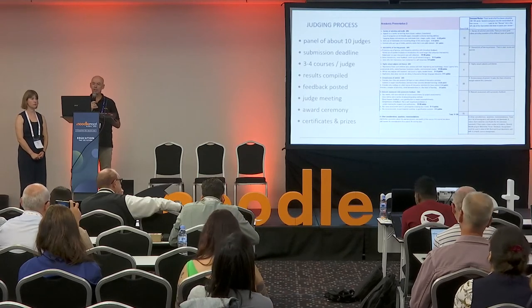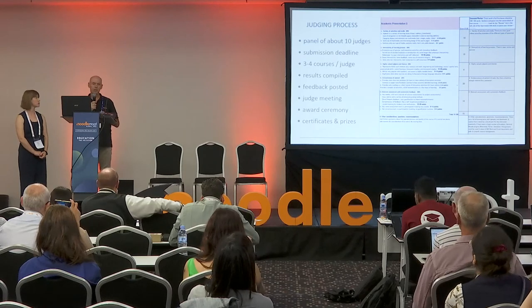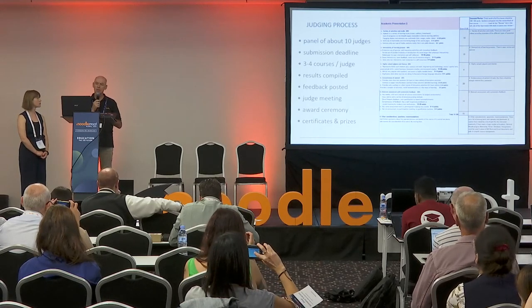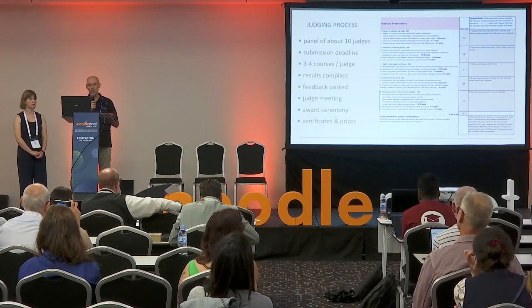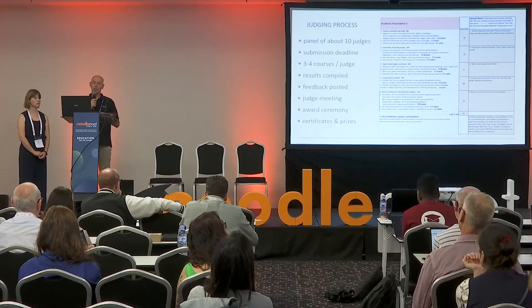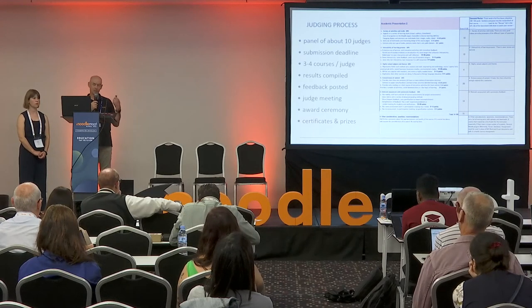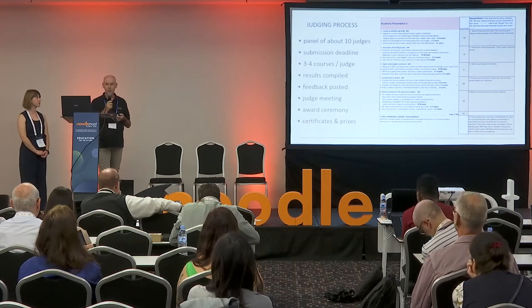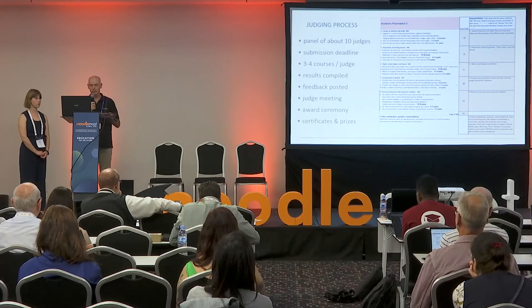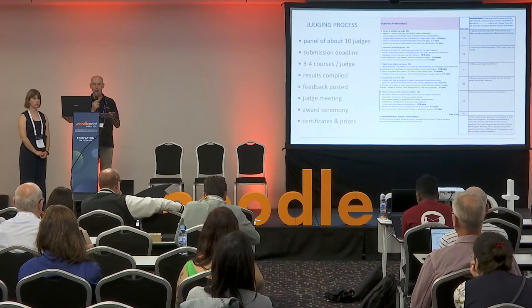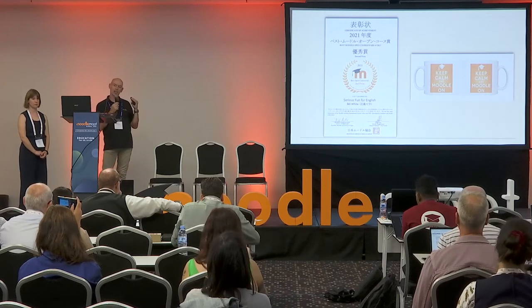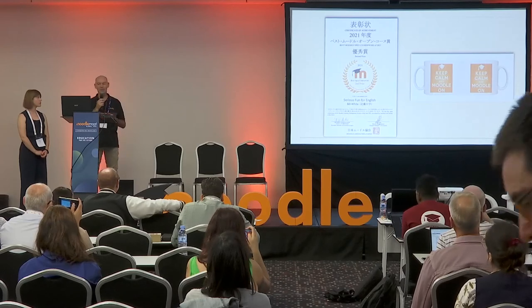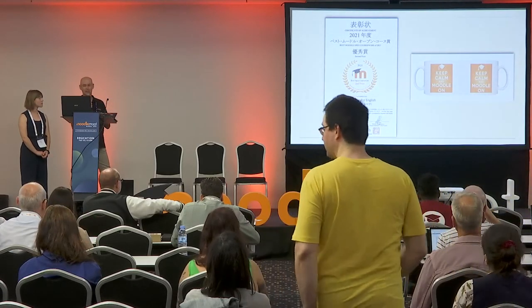As for our judging process, we have an annual Moodle Moot. We usually get around ten courses submitted, sometimes a little more or less. We have a panel of about ten judges and set a submission deadline, usually about a week before the Moot. Each judge gets three or four courses. Someone compiles the results. Judges post feedback on the showcase website. We have a judge meeting when the Moot starts, then an award ceremony where winners get certificates, prizes, and a 'Keep Calm Moodle On' coffee mug. We have first, second, and third or honorable mention awards.